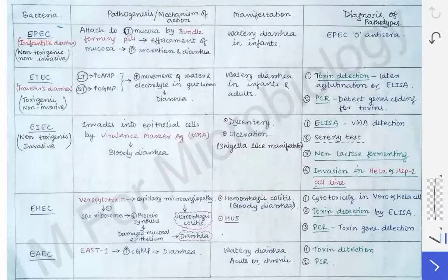We are going to read about the different pathotypes of E. coli. These pathotypes are sometimes asked as short notes separately — for example, write a short note on EPEC, ETEC, or infantile diarrhea. I have made a table here so that it becomes easy to remember all of those diarrhoeagenic E. coli pathotypes, and you can write about any one of them very easily.